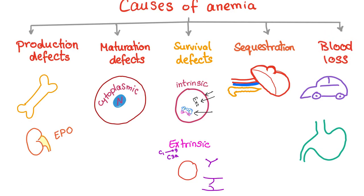Number five is acute blood loss. It has to be acute — chronic blood loss takes a long time, but acute blood loss causes anemia right away. Examples include a car accident causing hemorrhagic shock, or peptic ulcer disease, which is a very common cause of acute blood loss. The most common cause of anemia in the U.S. is iron deficiency anemia, probably due to blood loss.